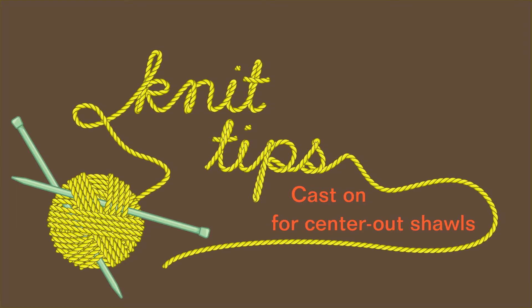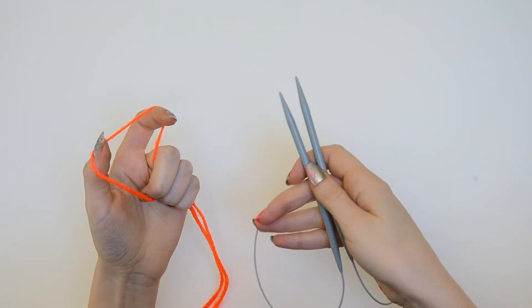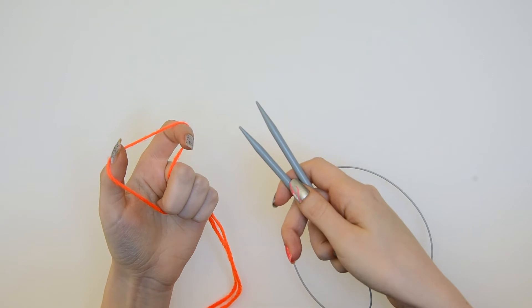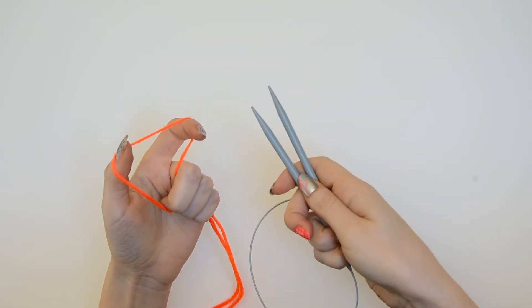This cast-on is used in the surfboard pattern from the Jersey Shore Knits Collection, but you can actually use it for any pattern that's constructed in a similar way. To do this cast-on, you'll need a pair of circular needles and previous experience with the long tail cast-on method.